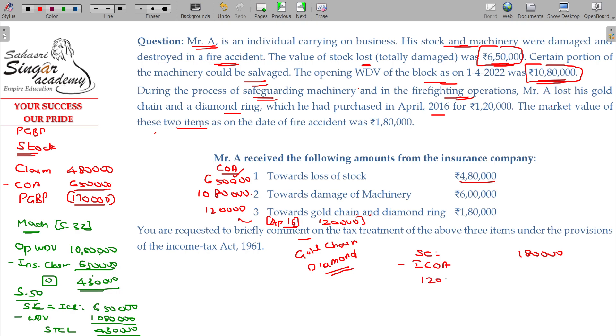April 16, April 16, 17, indexed cost of acquisition will be taken. 1 lakh 20 into inflation index up to the date of fire accident. Fire accident happened, as nothing stated we assume, only in 23-24 previous year, 331. Inflation index applicable in the year of acquisition 16-17 level is 264. Then the ultimate value can be 1 lakh 50,455. Then balance being long-term capital gain, long-term capital gain 59,545.